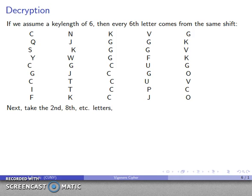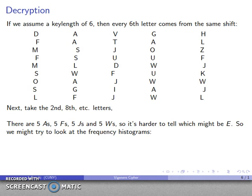Now let's take a look at the second, eighth, and so on letters. Here our decision is a little bit more complicated because I don't have any single letter that is overwhelmingly more common. What I have is 5 As, 5 Fs, 5 Js, and 5 Ws. I can't really decide which of these might be E. So we might take a look at the frequency histograms.